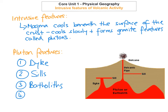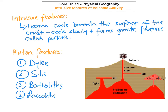The fourth and last intrusive feature you need to know is a laccolith. As you can see from the diagram, a laccolith is again a dome-like structure, just like a batholith, but the one thing that's different is that it forms a very flat floor. So a laccolith will always have a dome structure with a very flat floor. What happens is the magma forces its way up between the rock, and the pressure forces the overlying strata — the overlying rock — to bulge up, creating the dome-like structure. Then the magma cools and solidifies, and we call this intrusive feature a laccolith.